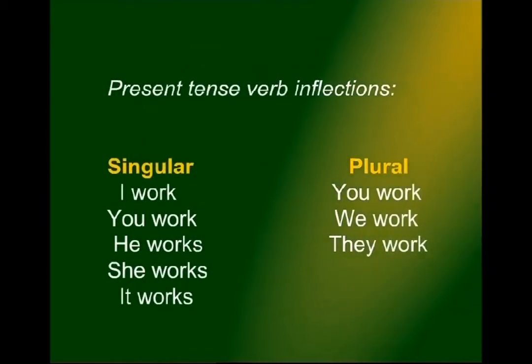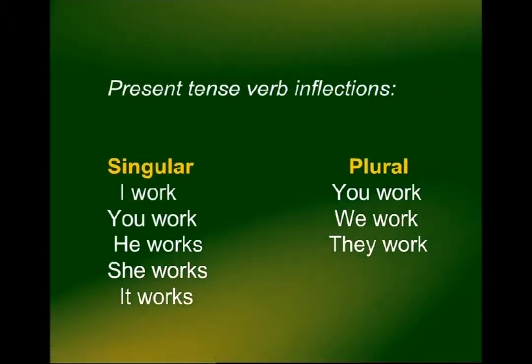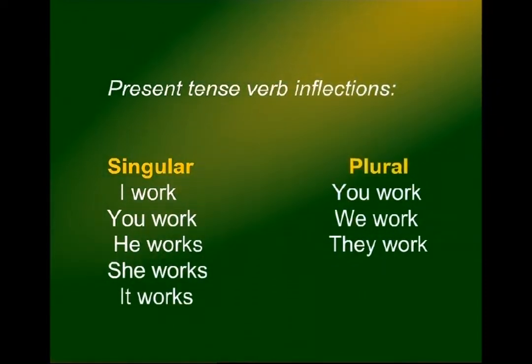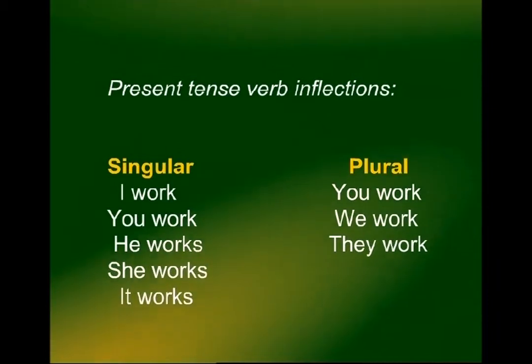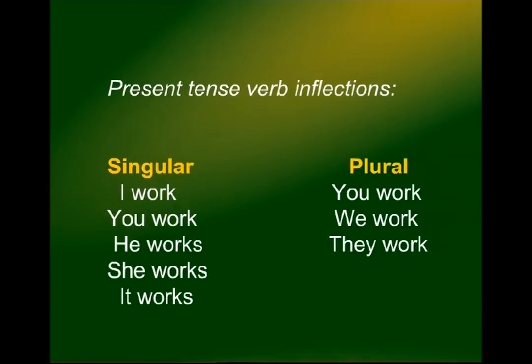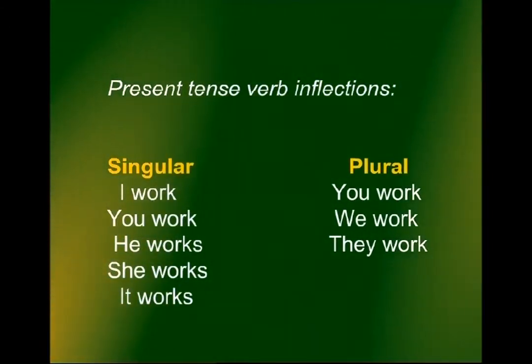However, there is a problem with present tense verbs. Present tense verbs have two forms. Look at this table and you will notice the pattern. In the singular it is: I work, you work, he works, she works, and it works. In the plural it is: you work, we work, and they work. Did you notice that there is an 's' at the end of present tense verbs for singular subjects, except for 'I' and 'you'? There is no 's' at the end for 'I', 'you', and all plural subjects.